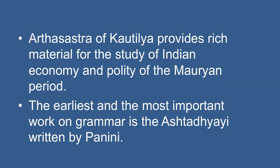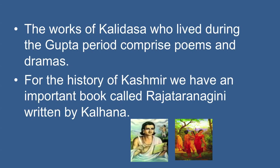The Arthashastra of Kautilya provides rich material for the study of Indian economy and polity of the Maurya period. Works on grammar are also sometimes useful for historical reconstruction. The earliest and most important work on grammar is the Ashtadhyayi written by Panini, dated by scholars around 700 BC. The works of Kalidas, who lived during the Gupta period, comprise poems and dramas. The famous among them are Abhigyan Shakuntalam, Ritusamhara, and Meghdoot. Besides being great creative compositions, they provide us a glimpse of the social and cultural life of the Guptas.